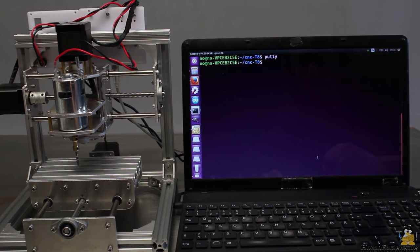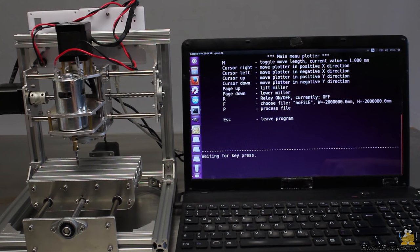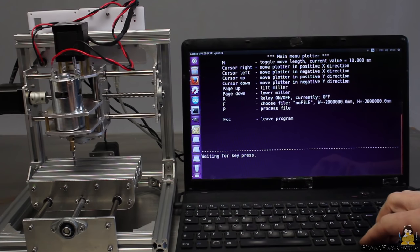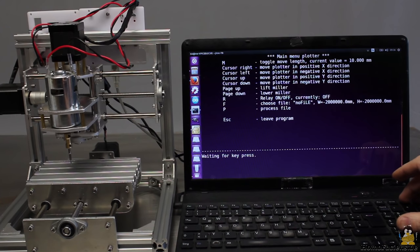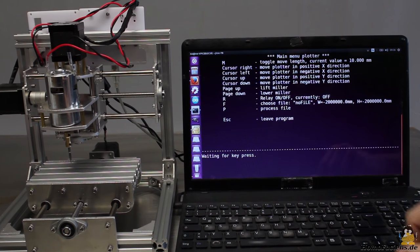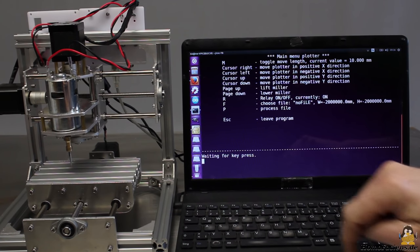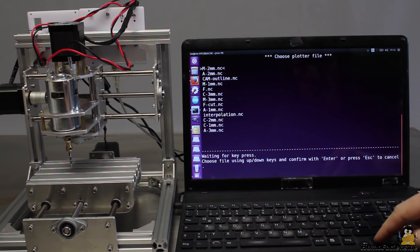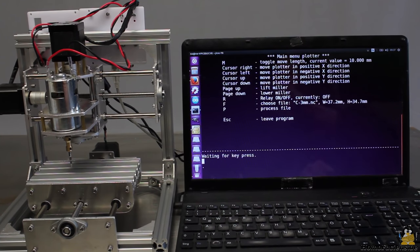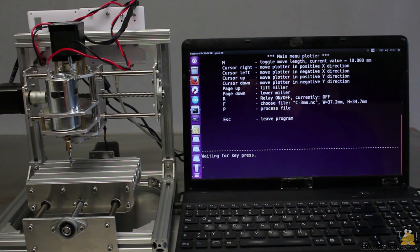Machine operation becomes more simple when using an appropriate control software. With the software I have written for this machine you can control the axis with the cursor keys. The spindle motor is turned on or off by another key press. Usually the command sequence used to machine parts are stored in a file. After selecting a G-code file you can send all commands to the microcontroller by a simple key press.